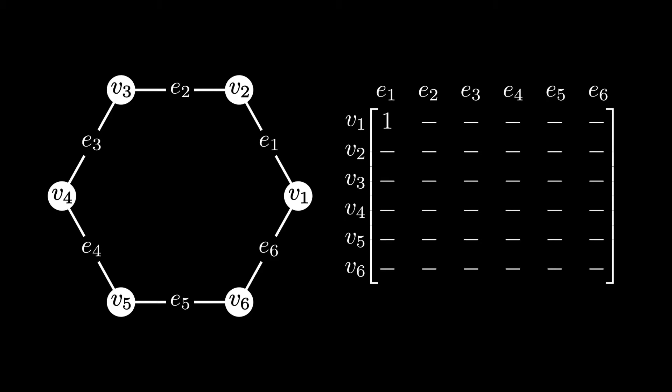Similarly, for the second entry, we ask whether v1 is incident to e2. Since they are not incident in our graph, then we put a 0 in for this entry.